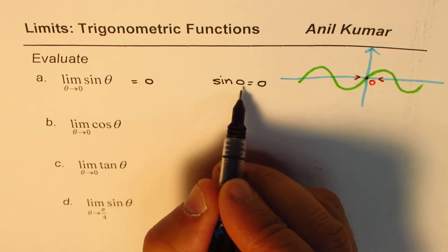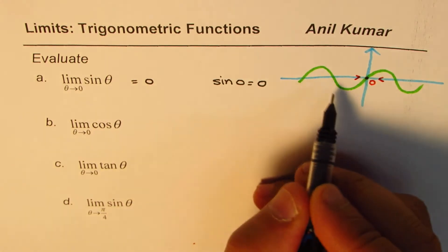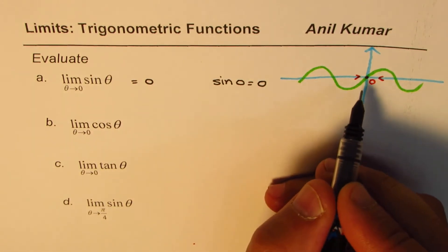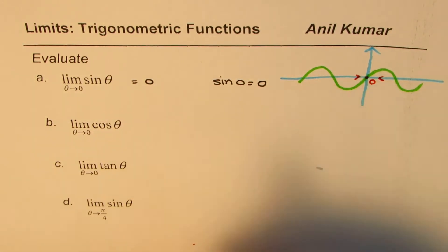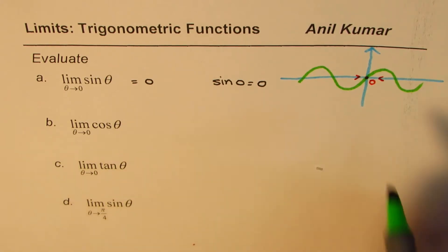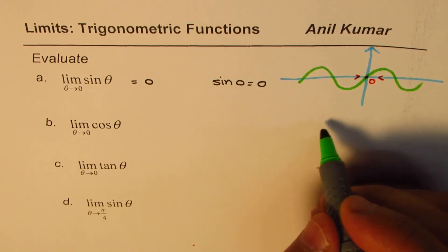This is also the value of the function at θ = 0, which is sine of 0 = 0. The limit is the same as the value of the function since the function is continuous. Now let's look into the cosine graph.